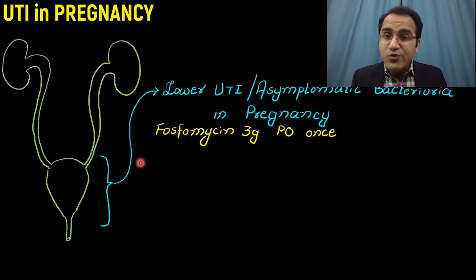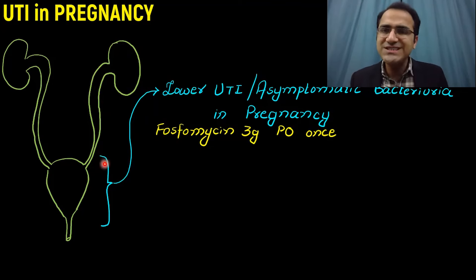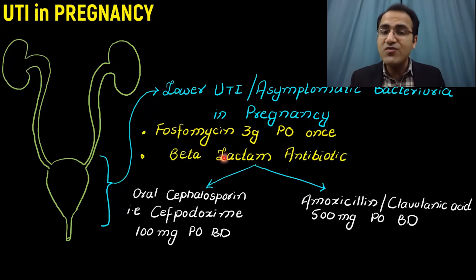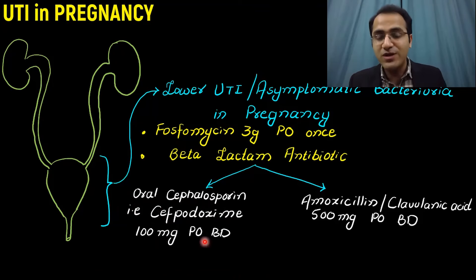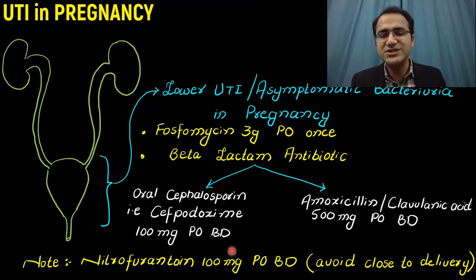For treatment, we divide into lower urinary tract infection and upper urinary tract infection. Lower UTI involves the bladder and urethra. For lower UTI and asymptomatic bacteriuria, give fosfomycin 3 grams orally once, or beta-lactam antibiotics such as amoxicillin-clavulanic acid 500 mg orally BD, oral cephalosporins like cefpodoxime 100 mg orally BD, or nitrofurantoin 100 mg orally BD. Note that nitrofurantoin is to be avoided when the patient is close to delivery.